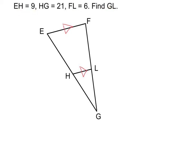Since EH equals 9, let's put that in right here at EH. HG equals 21. Boom. There it is. HG equals 21. FL equals 6 right there, and we want to find GL, so why don't I just give us a variable right there for GL since we don't know what that is.